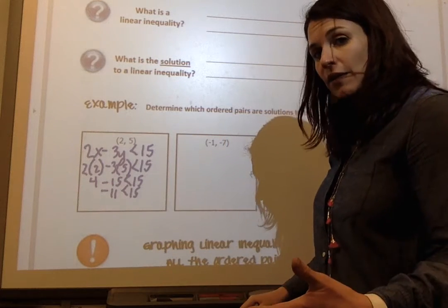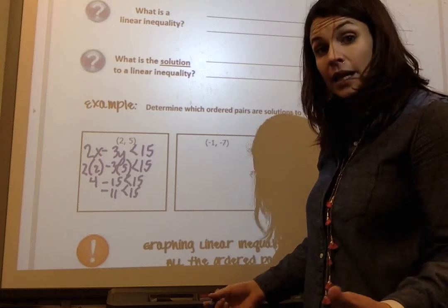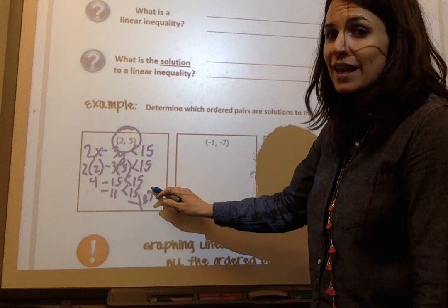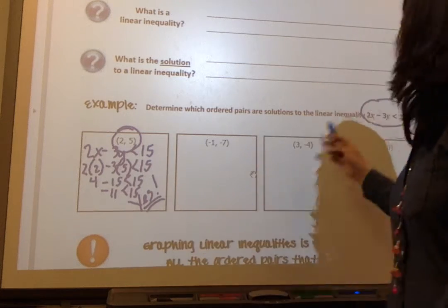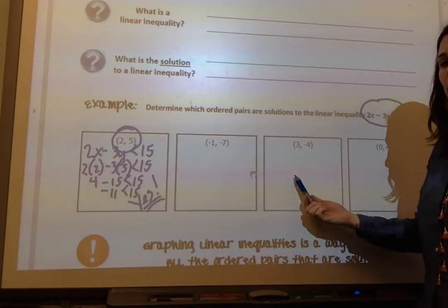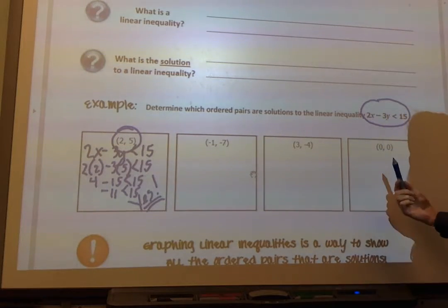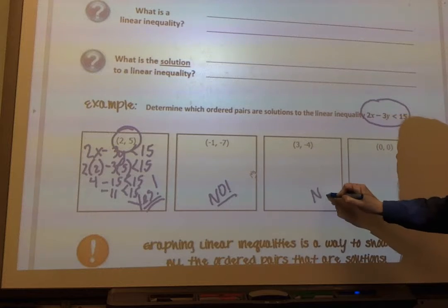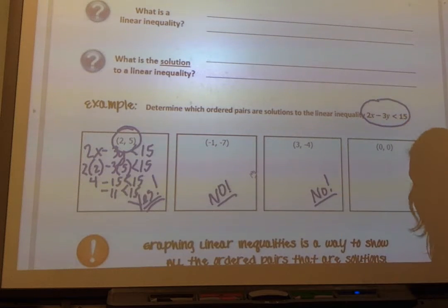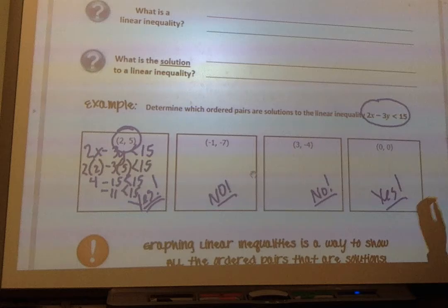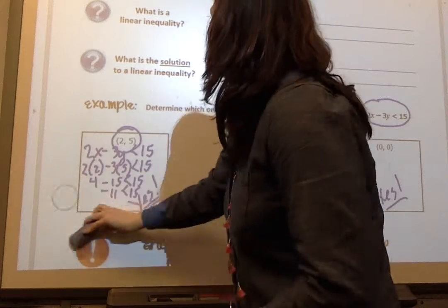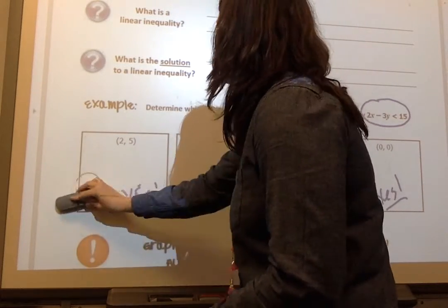And I ask myself, is negative 11 less than 15? It is. So this (2,5) is a solution to this linear equation. And if you go ahead and do these, you'll find out that no, this is not. No, (3,-4) is not. And yes, (0,0) is a solution. So that's just how we kind of check it and determine if something is a solution to the linear inequality.